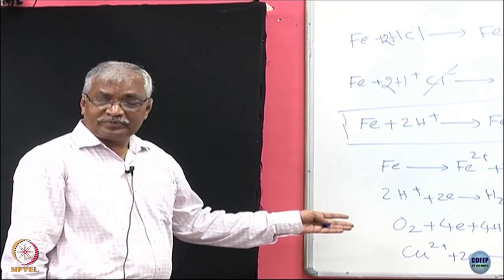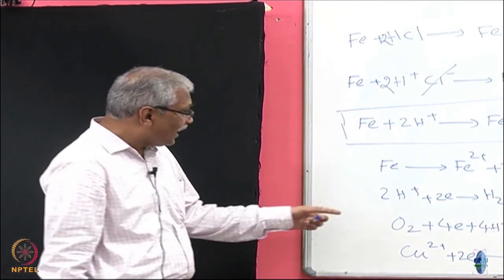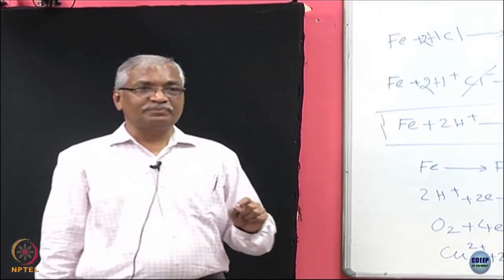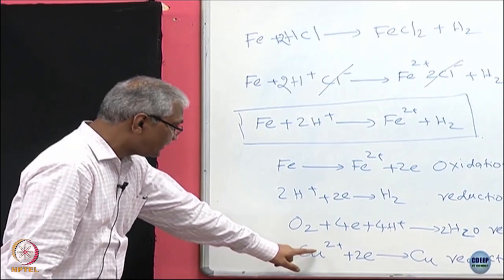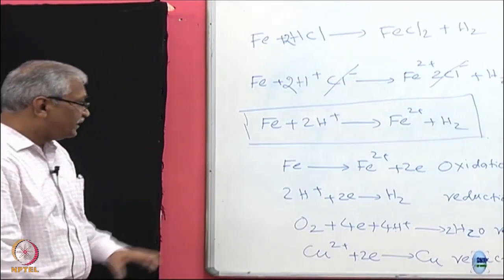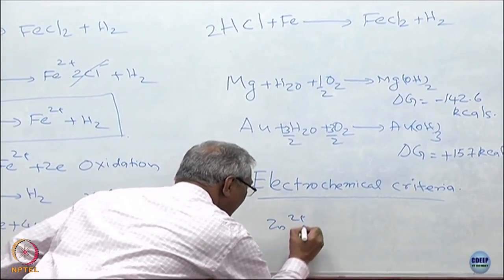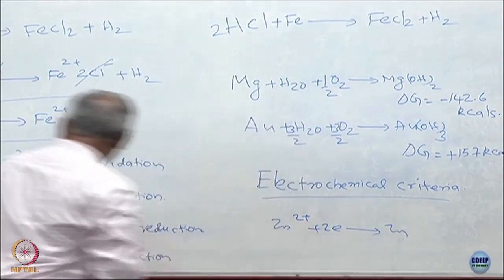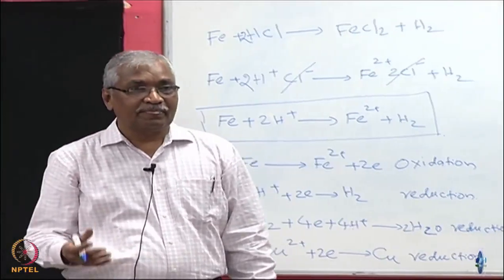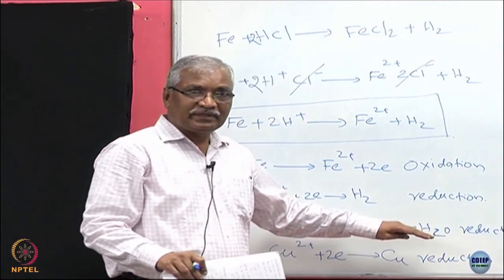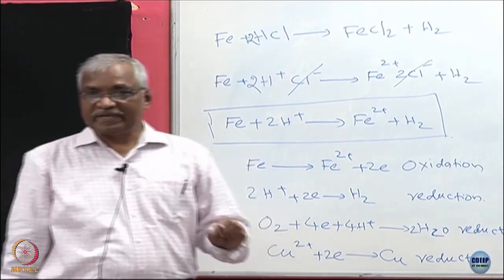It looks very difficult — can we really predict if a metal will corrode or not? We will see how you can simplify this and write a simple equation to show whether a reaction can occur. For example, can Cu²⁺ plus 2 electrons giving zinc occur while iron corrodes? It may not be possible. So that is what we are going to look at in the subsequent lecture — how do we really predict whether these reactions occur or not.